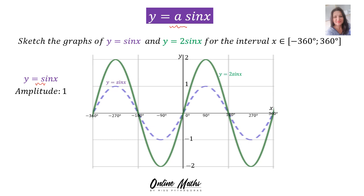Therefore, the amplitude is 1. When we go to the graph of y = 2 sin x, A's value is 2, therefore the amplitude is equal to 2. And when you look at the sketch, you can clearly see the amplitude is 2.